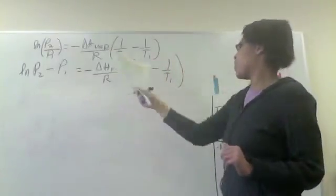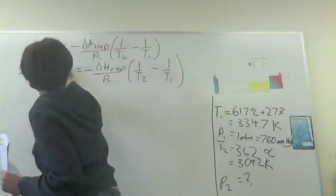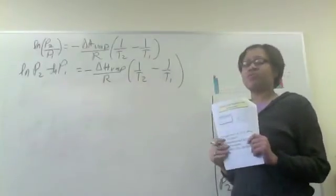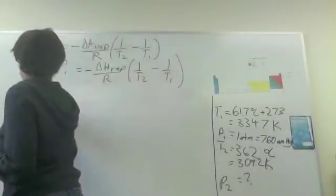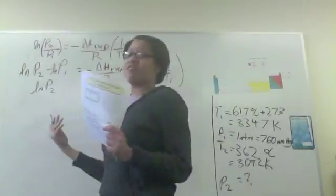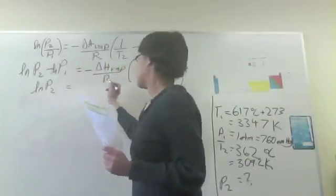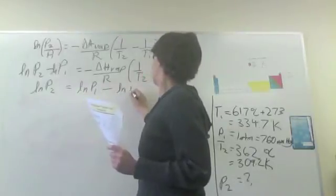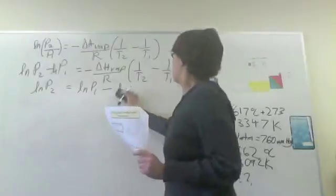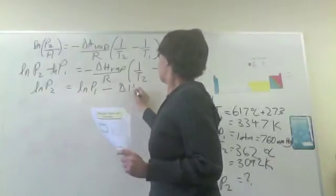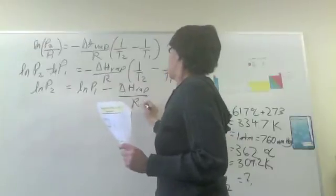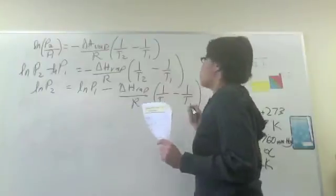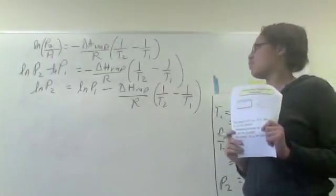Okay, and if we add the natural log of P1 to both sides of the equation, we'll get our unknown on one side of the equation by itself, which is what we want. Okay, so at this point, it is okay to start putting in our numbers.